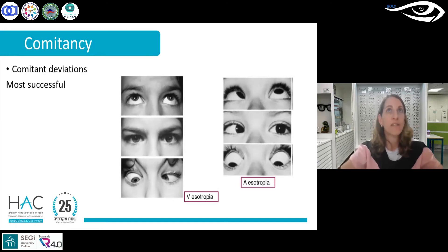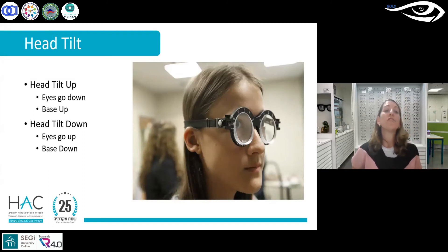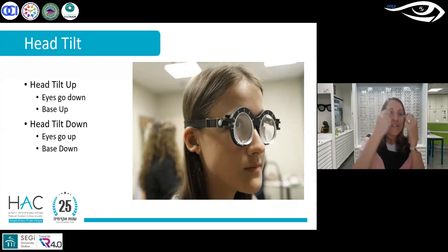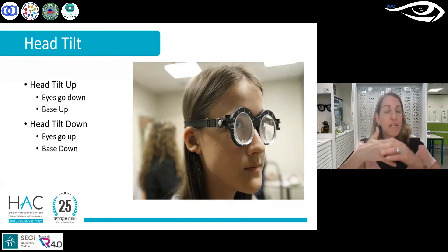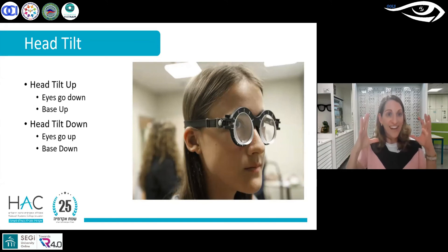Another use for prisms is addressing head tilts. If a patient walks around all day with the chin tilted up, it can cause neck pain and discomfort. The reason is that a chin-up tilt moves the eyes downward in the socket, reducing diplopia and providing more comfort when the eyes look down. We can help by prescribing base-up yoked prisms in both eyes so the images shift downward — the patient no longer needs to tilt their head and can keep it straight, viewing comfortably in the lower visual field.